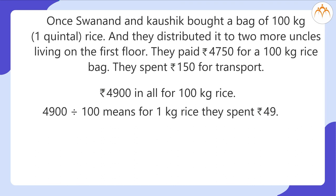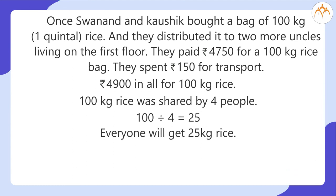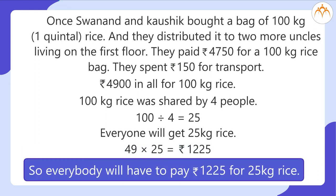100 kg rice was shared by 4 people, so 100 divided by 4 is equal to 25 — everyone will get 25 kg of rice. Now 49 multiplied by 25 is equal to 1225 rupees. So everybody will have to pay rupees 1225 for 25 kg of rice.